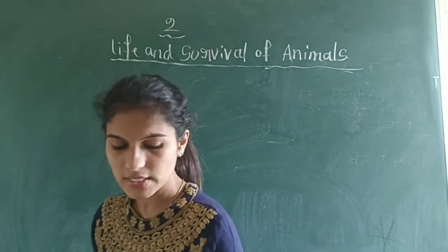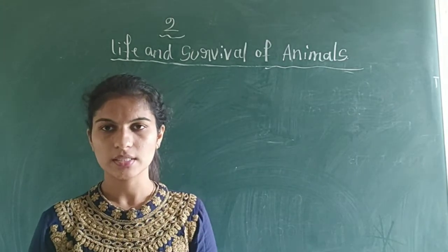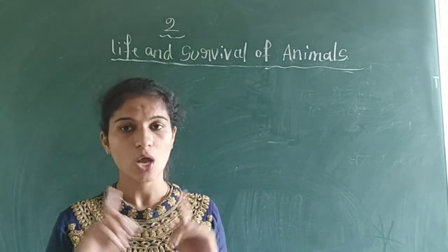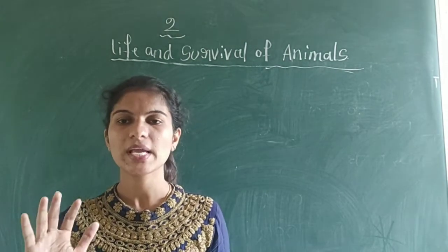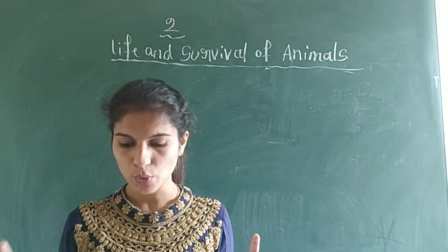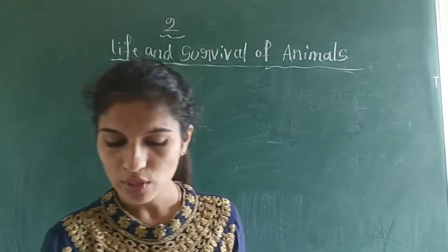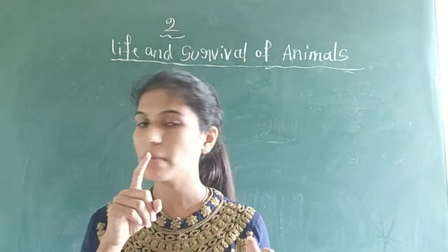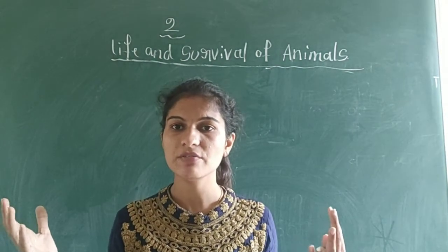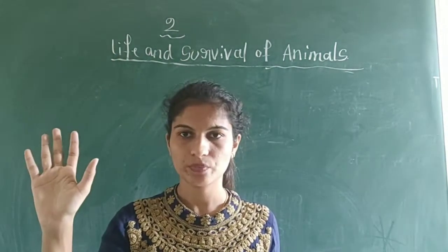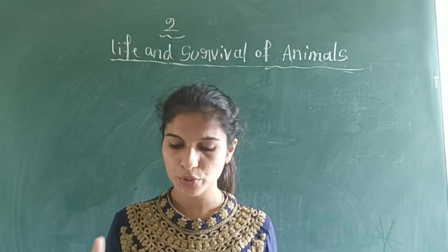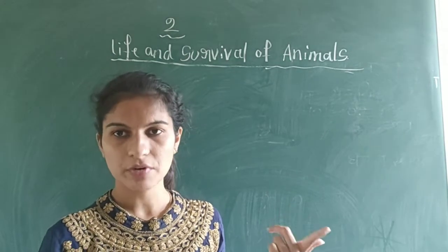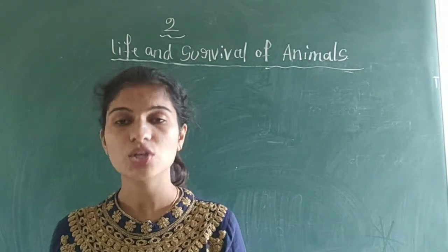There are many kinds of animals on this earth. There are many kinds of animals all around us. Some animals live on land, some live in water, and some other animals live in the air — those are called birds. Earth has vast areas of grasslands, big oceans, rivers, ice mountains, and scorching deserts.